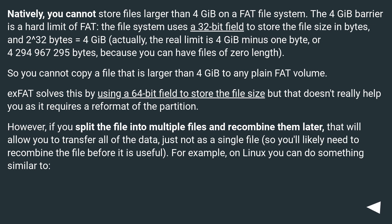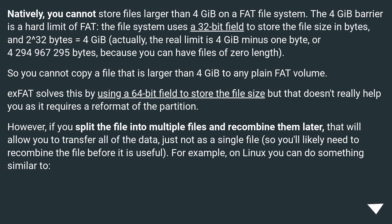Natively, you cannot store files larger than 4GB on a FAT file system. The 4GB barrier is a hard limit of FAT — the file system uses a 32-bit field to store the file size in bytes, and 2 to the power of 32 bytes equals 4GB.